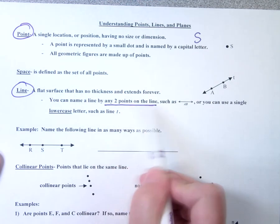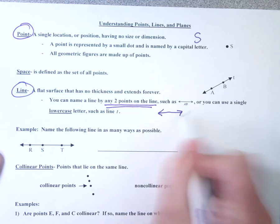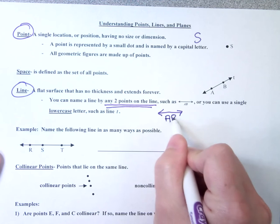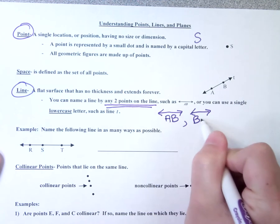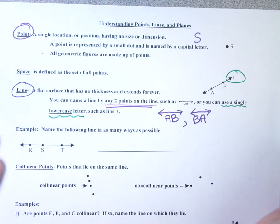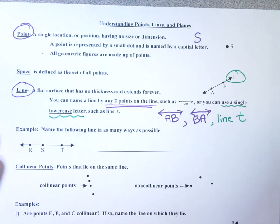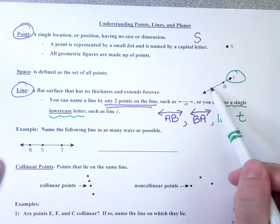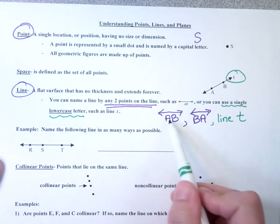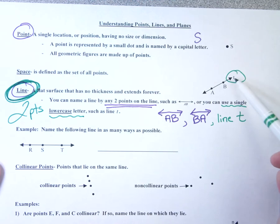To name a line, we use any two points on the line. A and B are two points on the line, so I can name it line AB — you draw a symbol with two arrows on both ends. Or I could flip it around and call it line BA. Another way to name a line is with a single lowercase letter. I can also call it line T, since T isn't a point on the line. If you have two points on the line, use the line symbol with the two points.